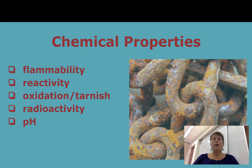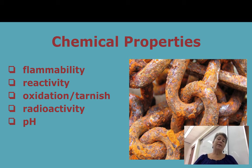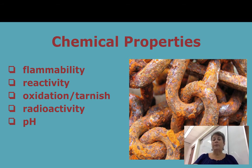When we talk about matter, we also have to talk about its chemical properties. A chemical property is a little bit different from a physical property because it has to do with some kind of change in that substance. For example, flammability — how easily does it burn? And reactivity — how easily does it combine with other elements or substances to form new substances?